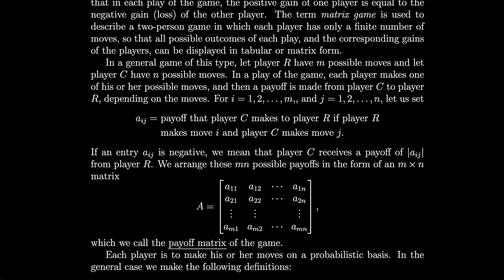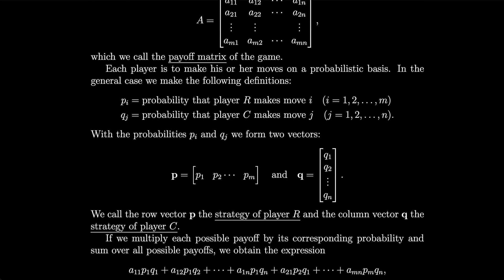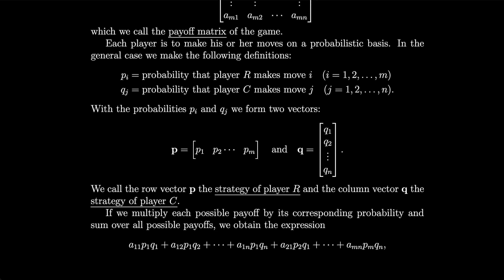Each player is to make his or her moves on a probabilistic basis. In the general case, we make the following definitions: pi is the probability that player R makes move i, and qj is the probability that player C makes move j. With the probabilities pi and qj, we form two vectors, p and q. We call the row vector p the strategy of player R, and the column vector q the strategy of player C.